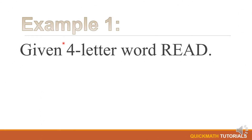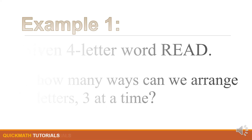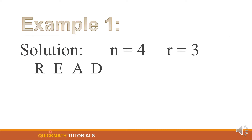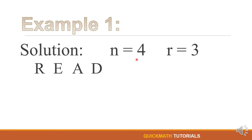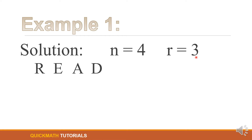For our first example, we have the four-letter word READ. In how many ways can we arrange its letters three at a time? For our solution, since there are four letters in the word READ, n is equal to 4 and r is equal to 3, since we are asked to arrange three letters at a time. Since r is equal to 3, we will write three blanks.